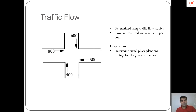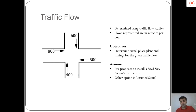The objective is to determine the phase plans and signal timings for the given traffic flows. When I say signal phase plans and timings, I am referring to the duration of green and red times to be implemented on the traffic signal to ensure smooth movement of traffic — this process is also known as signal design. We assume it is proposed to install a fixed time controller at this site, as opposed to an actuated signal, where the duration of green and red times fluctuates depending on traffic flow at a given time of day.